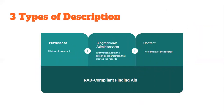One of the most important principles of RAD is that information provided at each level of description must be appropriate to that level. The description at the fonds level won't comprehensively go into detail about each individual item because it's meant to describe all objects in the fonds as a collective unit. A RAD-compliant finding aid will contain three types of description: the provenance of the records, or as RAD calls it, the custodial history, which focuses on a fonds' history of ownership — in other words, who has and had control over the records at their various stages of existence. Biographical or administrative descriptive information refers to the origins of the records.